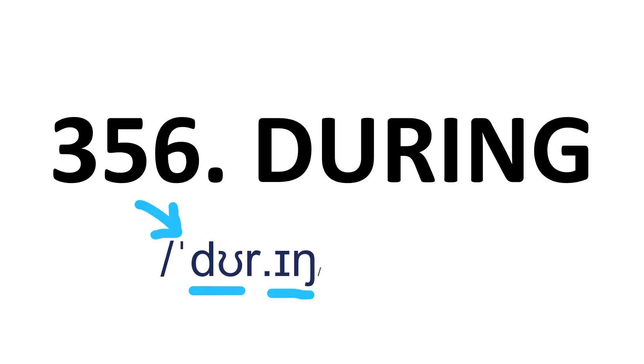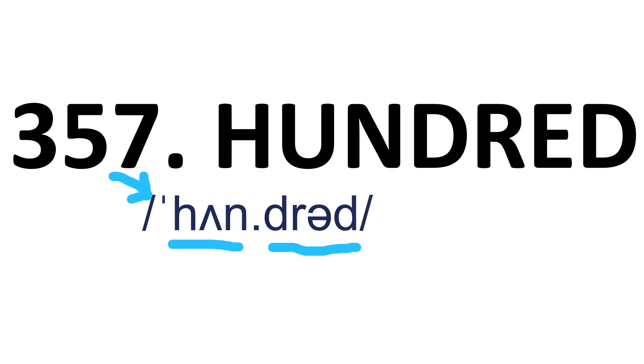During — it's a two-syllable word and stress is on the first syllable. During. Hundred — it's a two-syllable word and stress is on the first syllable. Hundred. Am — it's a one-syllable word. Am.